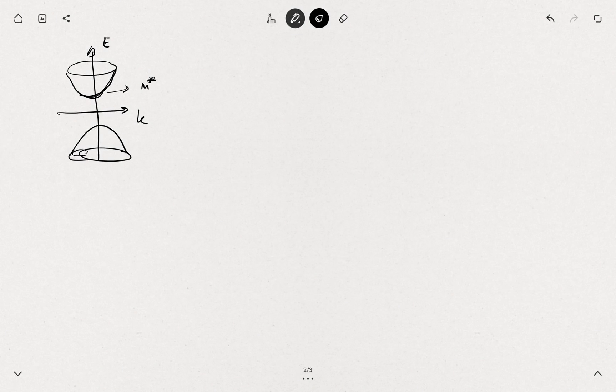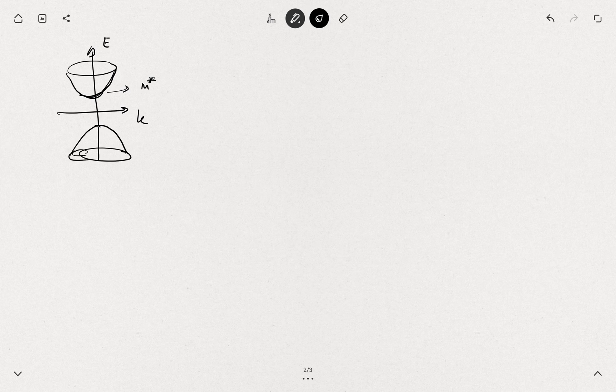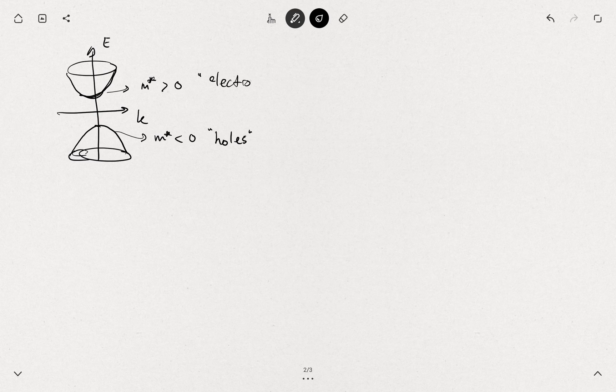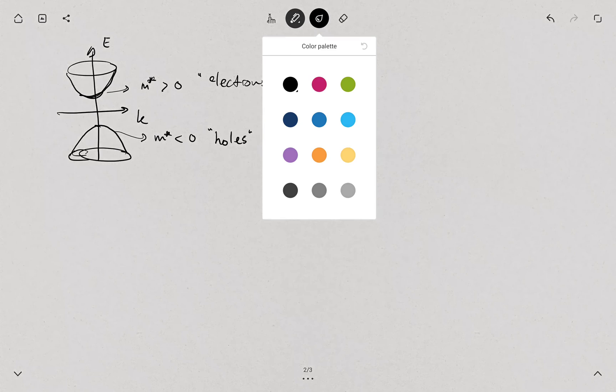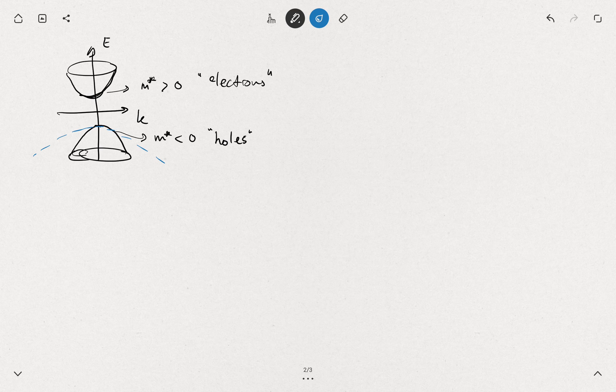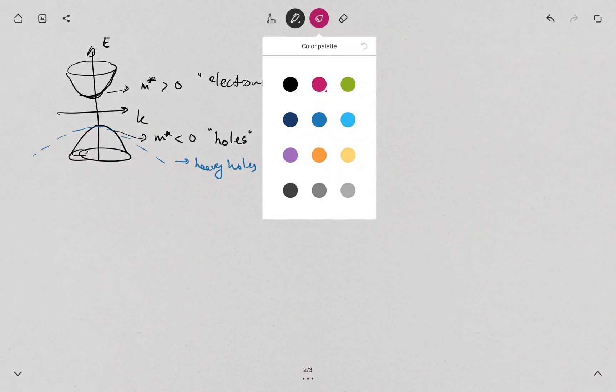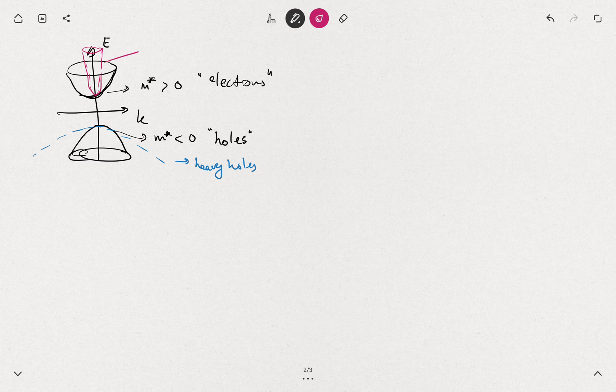On this part the effective mass is actually smaller than zero; here it's bigger than zero. Those are what you usually call in the semiconductor holes and electrons. They can be anisotropic, they can be asymmetric. For example, the holes can be of very large curvature, so you can say heavy holes, and maybe you have also very light electrons.